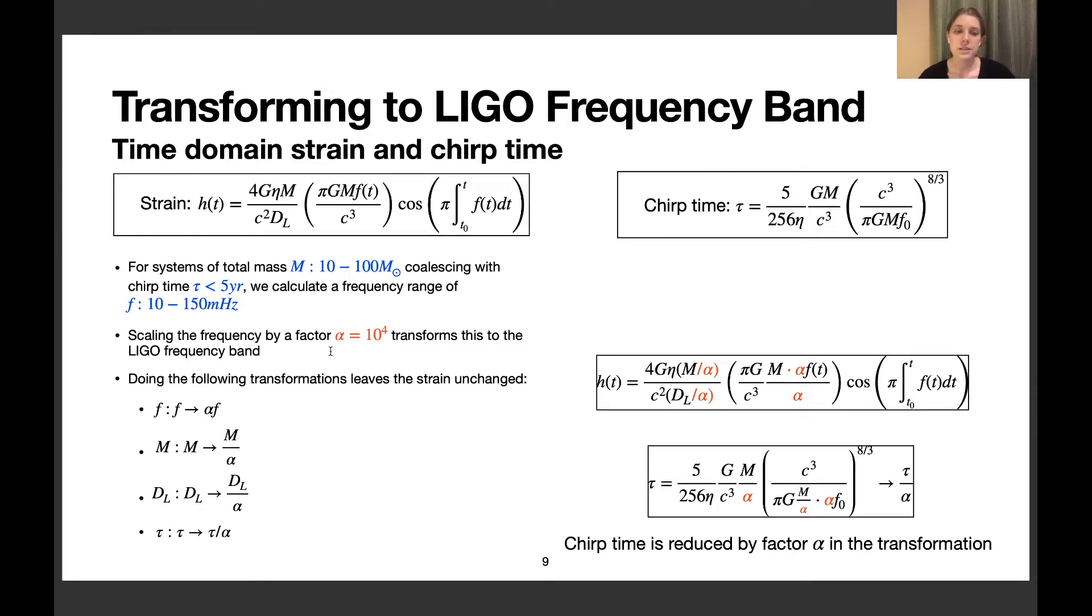We can scale this frequency up by a factor of α = 10^4 to bring these into the LIGO band. But we want to leave the strain unchanged in the transformation, so we also transform the mass, distance, and chirp time down by a factor of α. After the transformation, the waveforms will merge in much less time than they would in the LISA band.